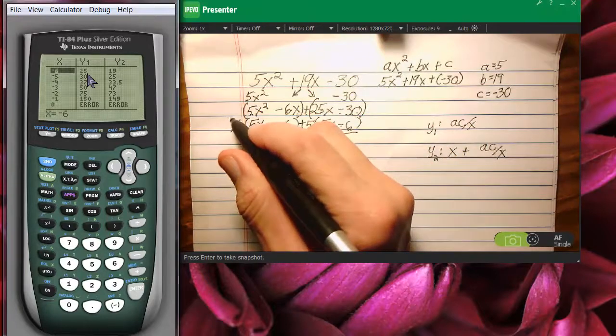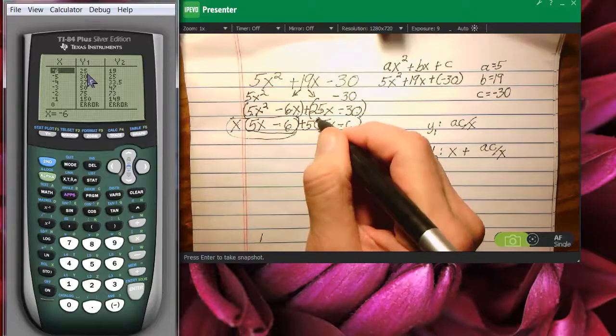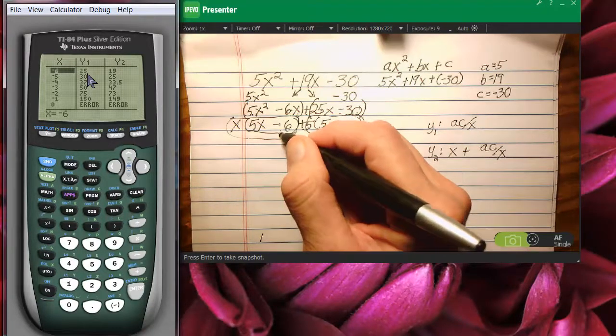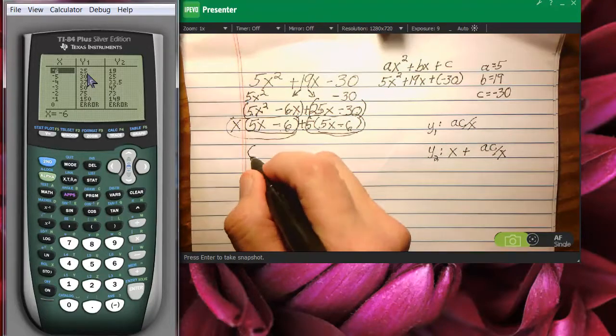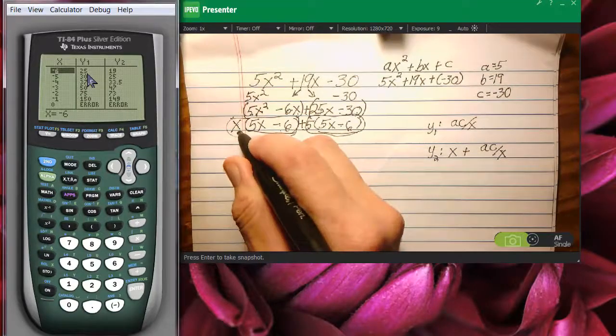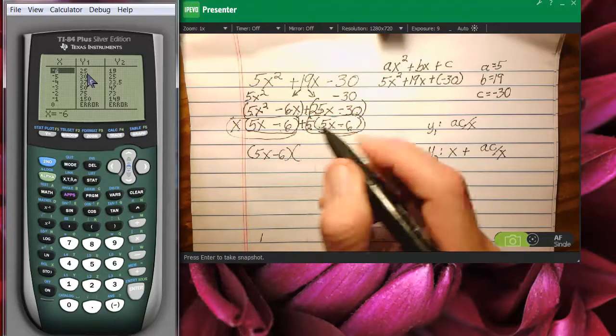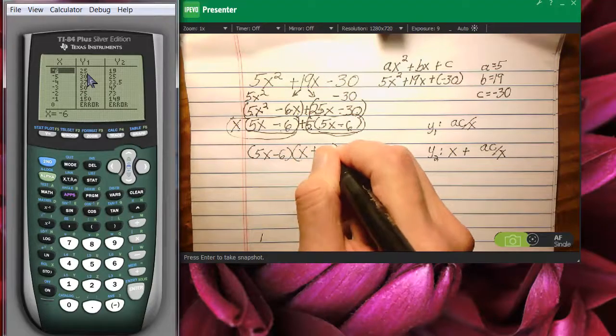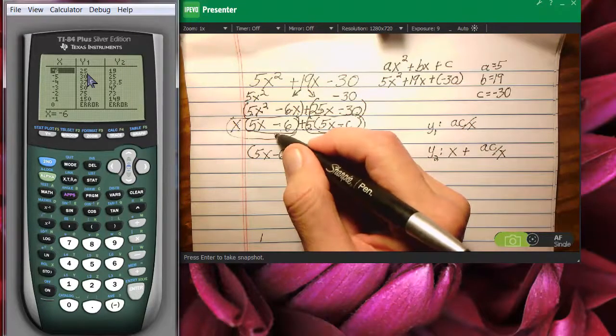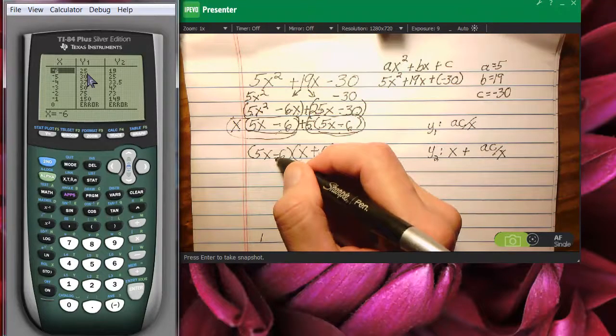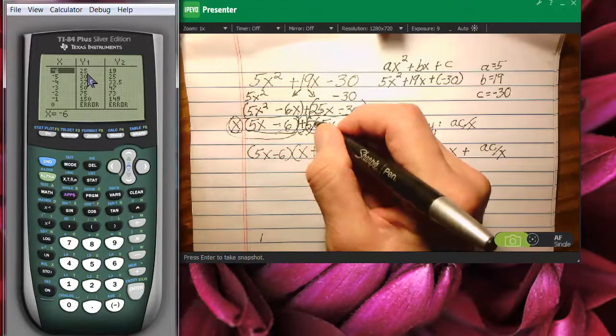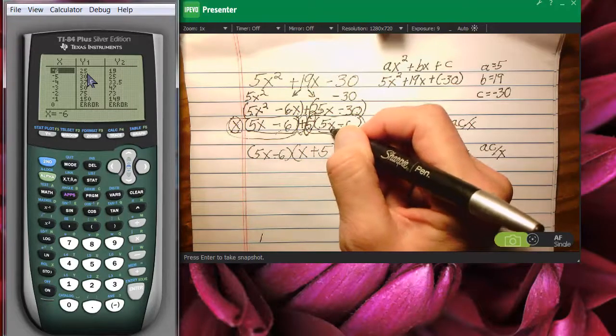This actually is one term now, and this is one term now. So I'm going to factor out 5x minus 6 because they're in both terms. That now becomes the GCF. So what follows is x plus 5. If you can't remember or if it doesn't make sense to use 5x minus 6 as the GCF, just remember you write it down once. And then you write the leftovers, which in this case are x plus this 5 that was pulled out in front of the 5x minus 6 over here.